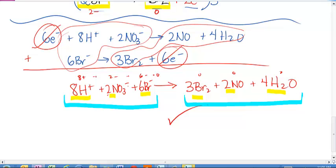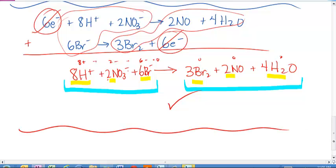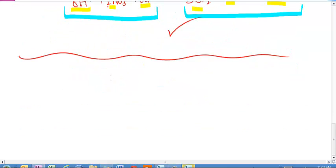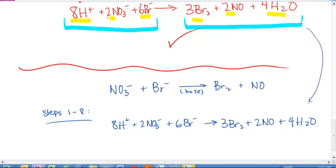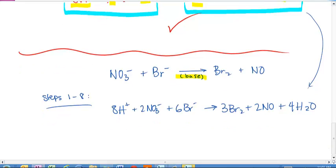I'm going to mention the if basic. We didn't do step 9, because I didn't tell you it was in a base. What if I had the very same reaction, NO3 minus plus BR minus, but I said this is taking place in a base. And I get BR2 plus NO. Well, I would go through steps 1 to 8, just like we did. And where we left off with was 8H plus plus 2NO3 minus plus 6BR minus yields 3BR2 plus 2NO plus 4H2O. That's where we left off with up here, right? That was steps 1 through 8. But, because it very clearly states this is taking place in a base, we're going to do step 9.